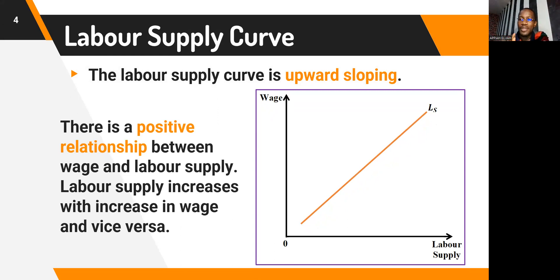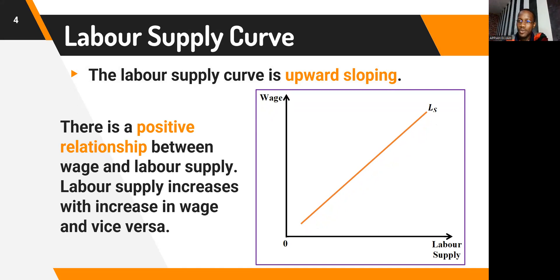Labor supply increases whenever there is an increase in wage, and when wage decreases, labor supply also decreases. When wage is increasing, people are willing to offer themselves for work, so labor supply tends to increase. If the wage decreases, people are discouraged from working because the wage rate is very low, and that decreases the labor supply.